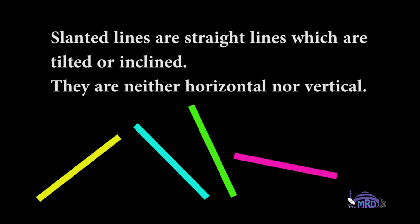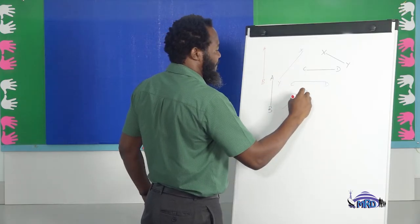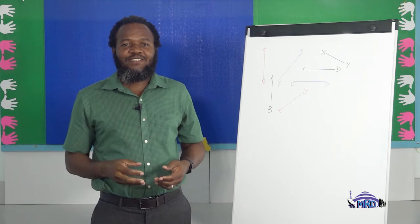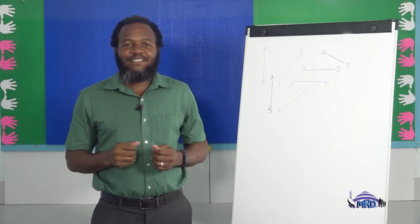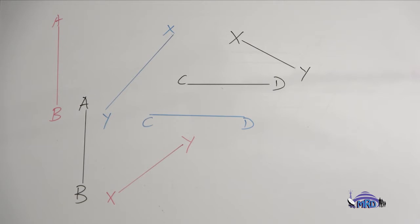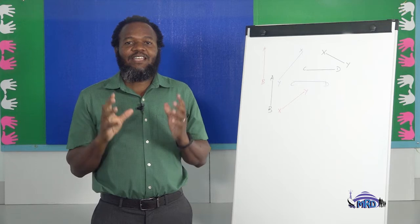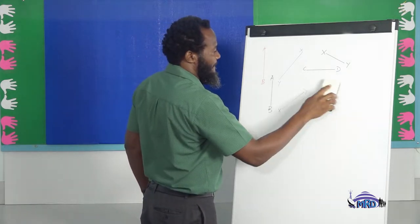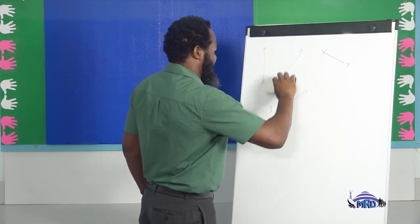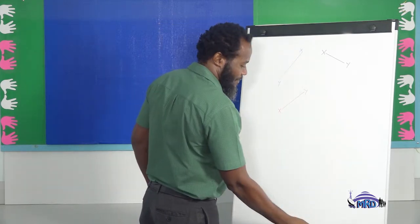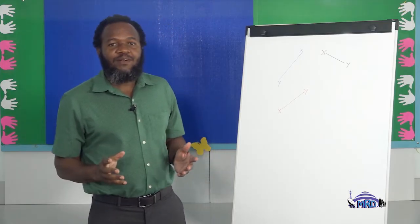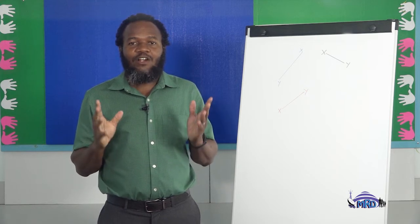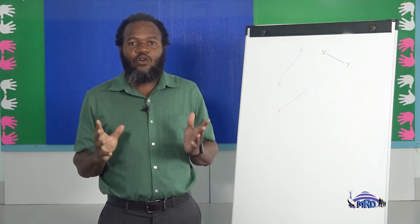Now I'm going to draw some other lines on my board. Can you tell me which lines drawn on the whiteboard are slanted? If you selected the lines which are labeled X and Y, then you are absolutely correct. Remember, slanted or oblique lines are straight lines which are tilted or inclined — they are neither horizontal nor vertical.